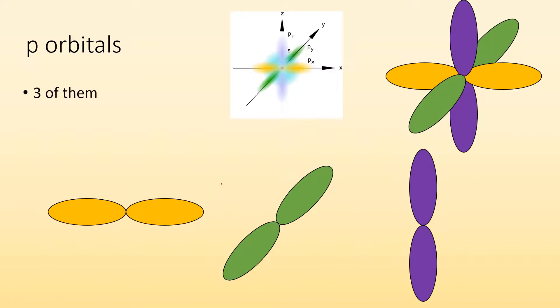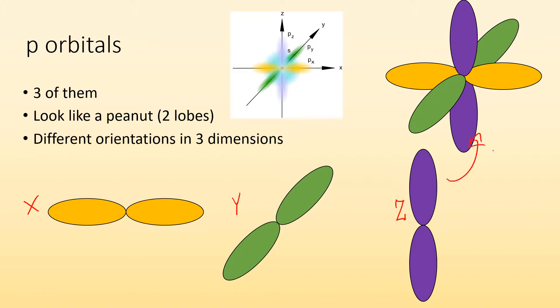The P orbitals, and there's three of them, they all look similar. They all have this kind of peanut shape. They got two lobes, and they have different orientations in three dimensions. Some lined up with the X, some lined up with the Y, maybe some lined up with the Z. And then when they all come together, they kind of look like this, which is a pretty neat shape. So we got the contour representation here and the electron density representation over there.